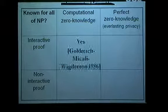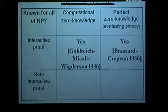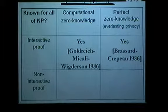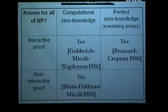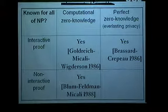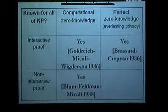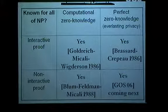We have this picture where people found out how to give interactive proofs that have polynomial computations and also perfect zero-knowledge, and we have non-interactive proofs with computational zero-knowledge. It turns out pairing-based techniques, using something very similar to this construction, can give us perfect and everlasting zero-knowledge.